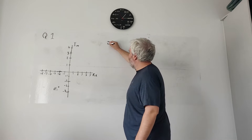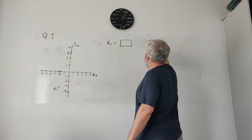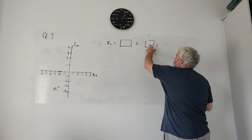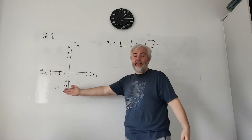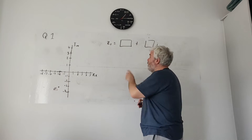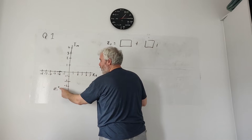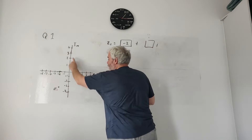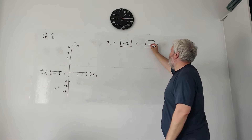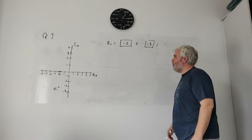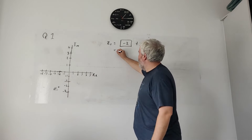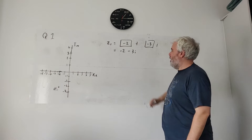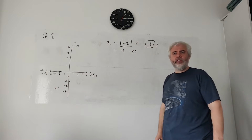A complex number Z1 looks like a number plus another number in front of an i. So what is this number? Looking at the real part first, the dot is underneath minus 2, so minus 2. Looking at the imaginary part, the dot is across from minus 3. We'd neaten that up and write minus 2 plus times a minus is minus 3i. So that's your answer to A part 1.